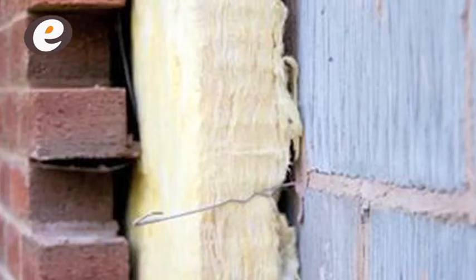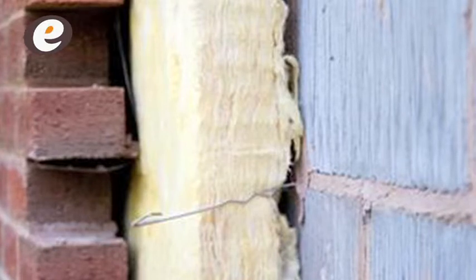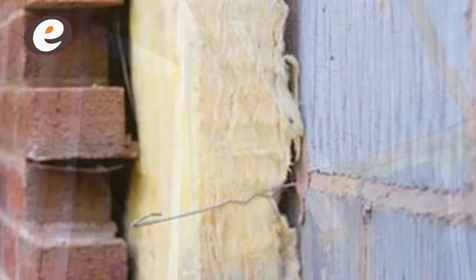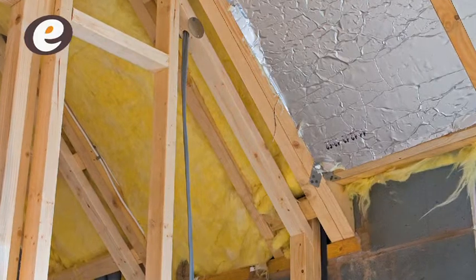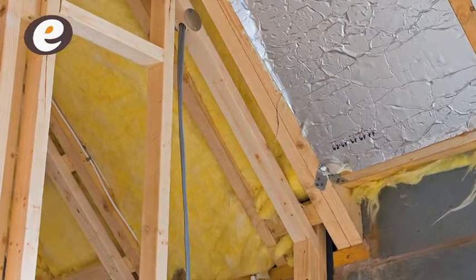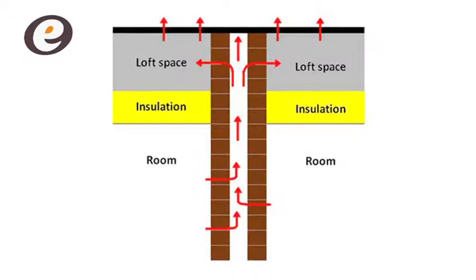Invest in your building fabric. It is possible to achieve compliance with Part L 2010 without the need for renewable technology if you can reduce your fabric U values. If the dwelling is to be assessed under the Code for Sustainable Homes, this approach will gain you valuable credits under Energy 2 Fabric Energy Efficiency.